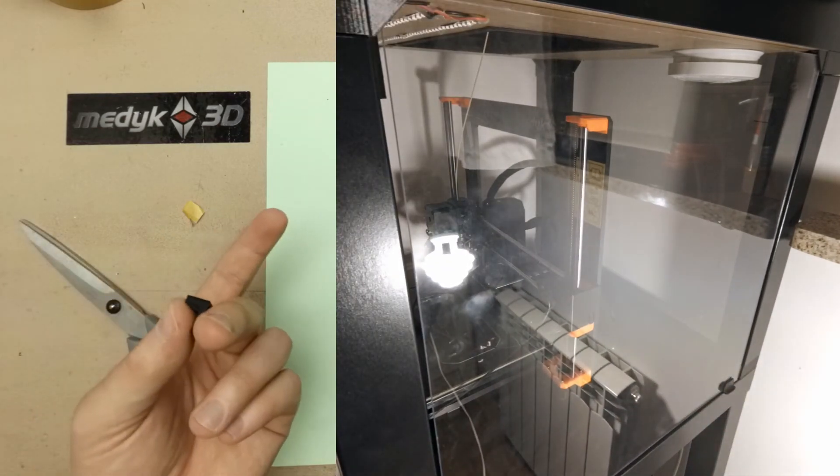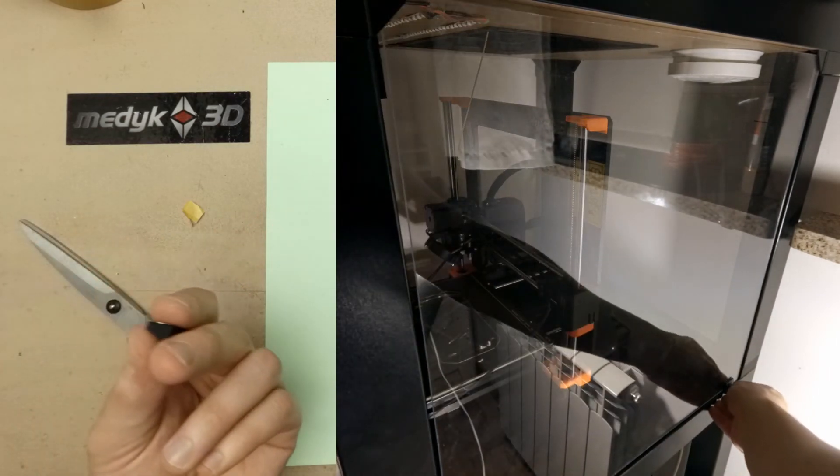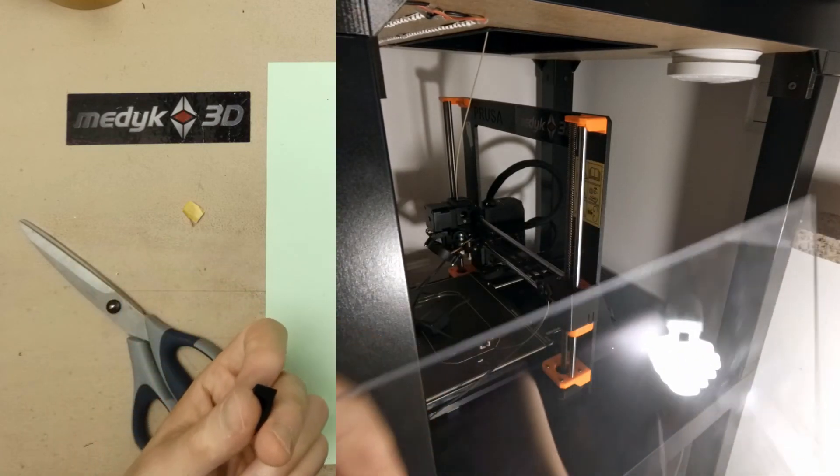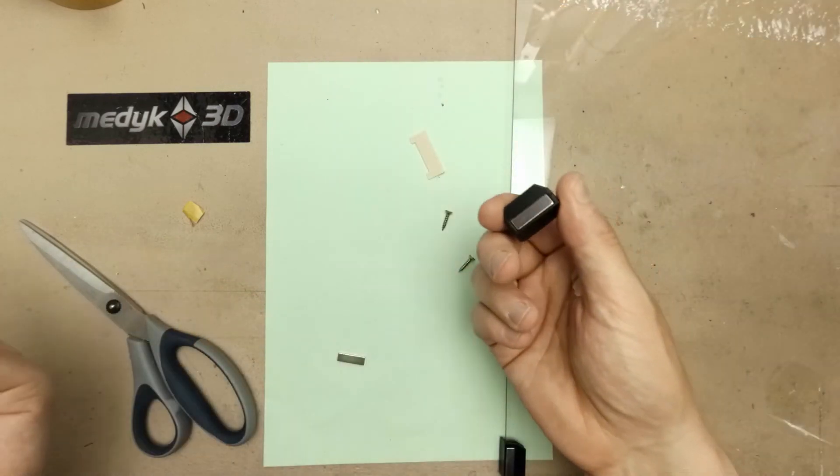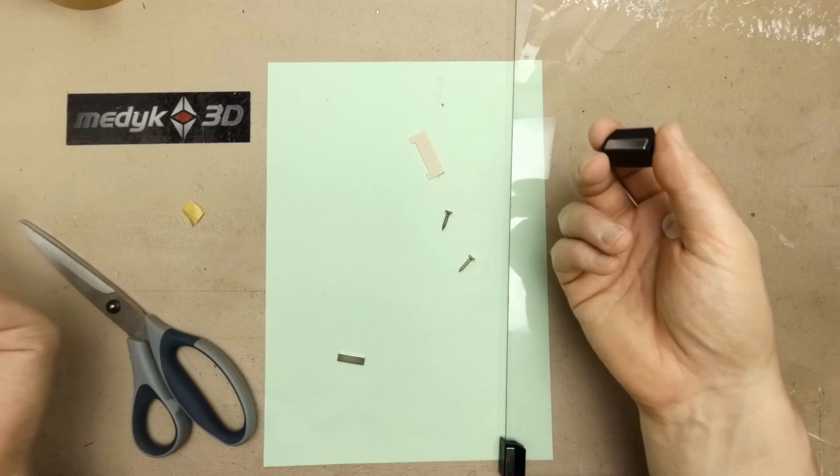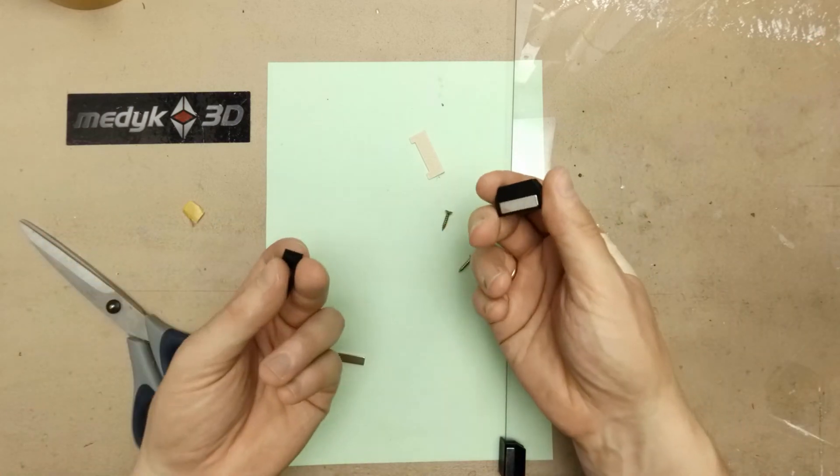I am using the detachable side panels so I can easily switch between printing with PLA and ABS. Because for PLA it's better to print without enclosure, and for printing with ABS it is better to print with enclosure.